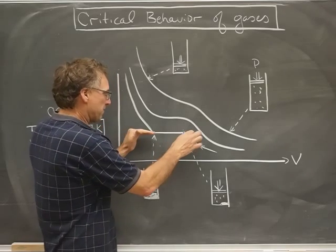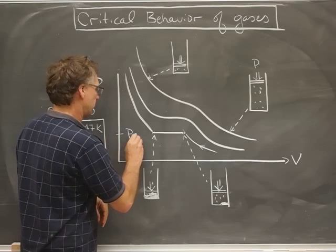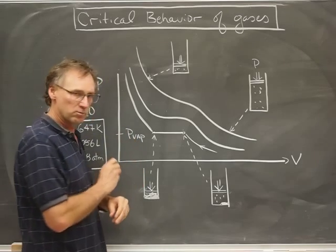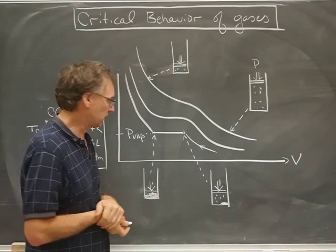And so that all happens at this one pressure, and that pressure gets a special name: it's called P-vape, the vapor pressure at that particular temperature or for that isotherm.